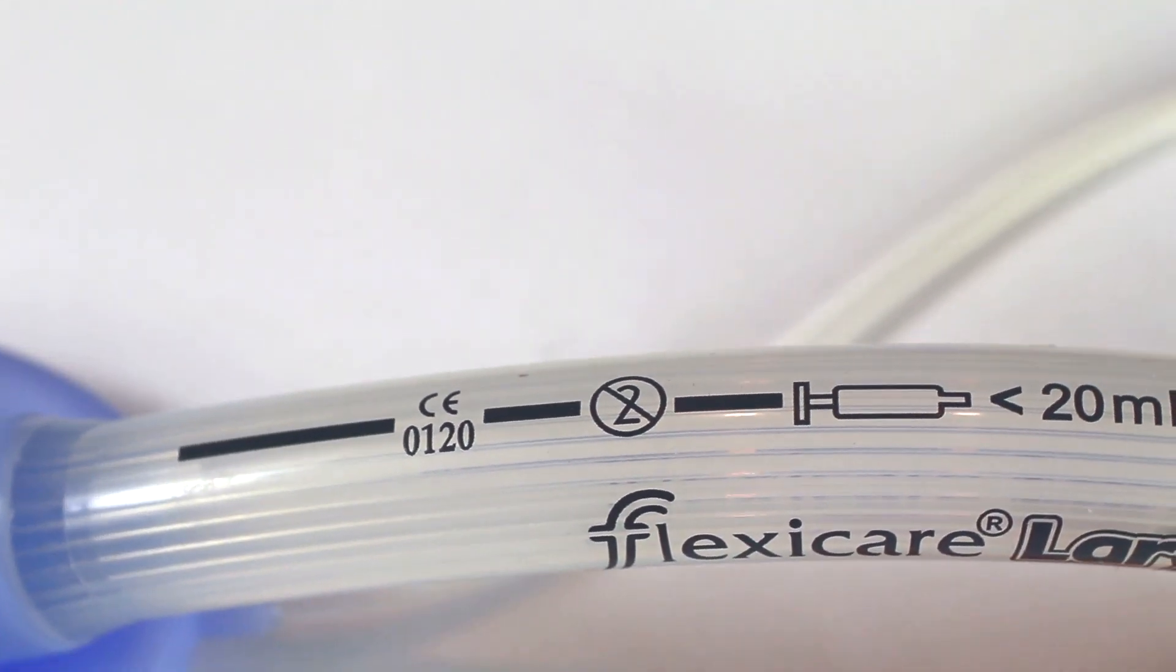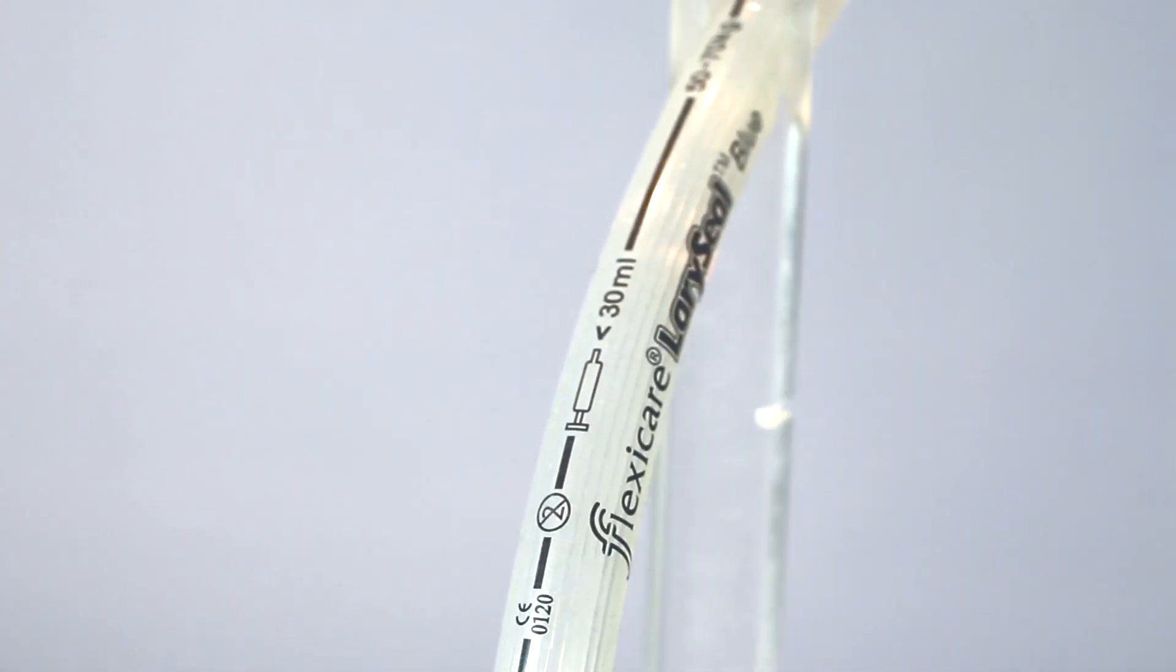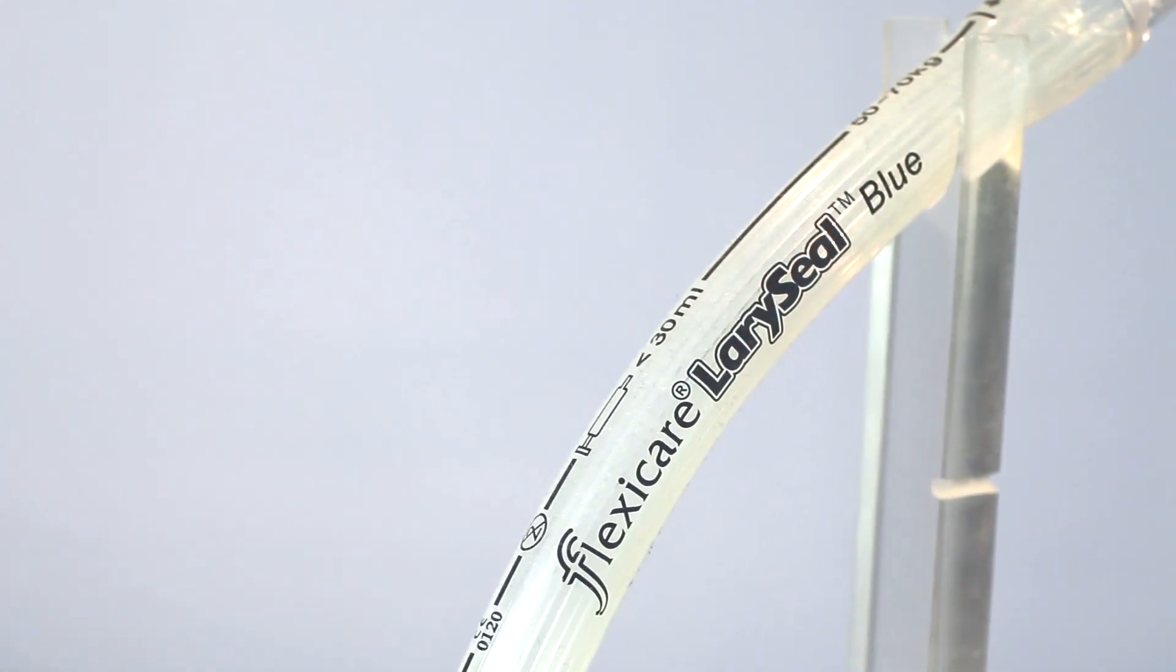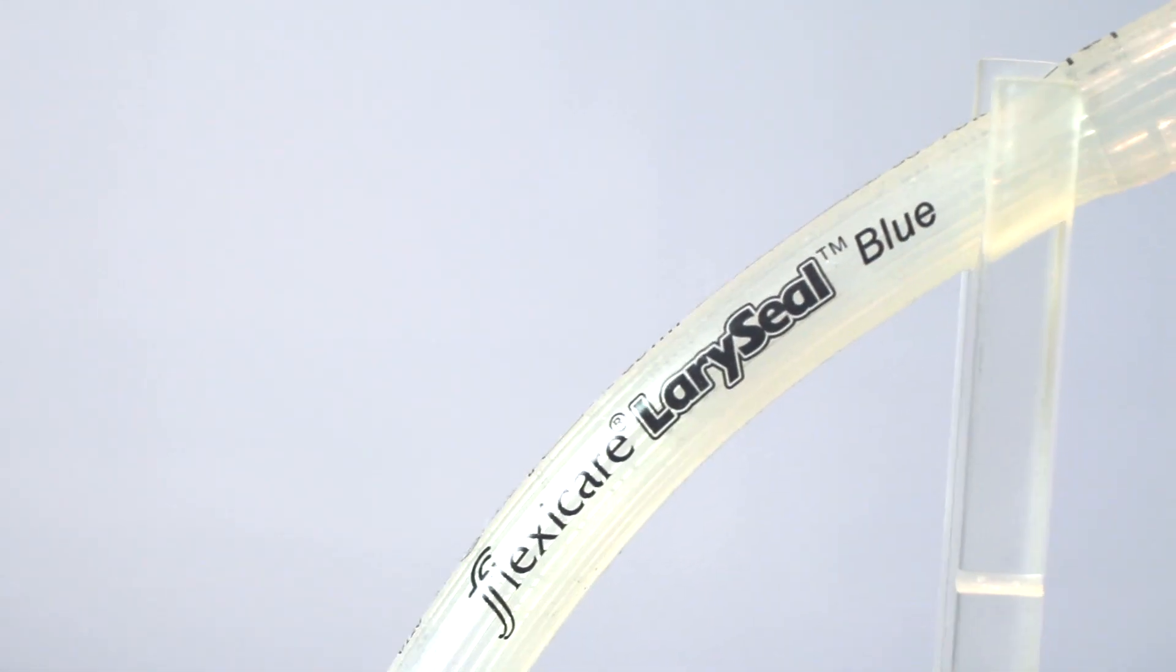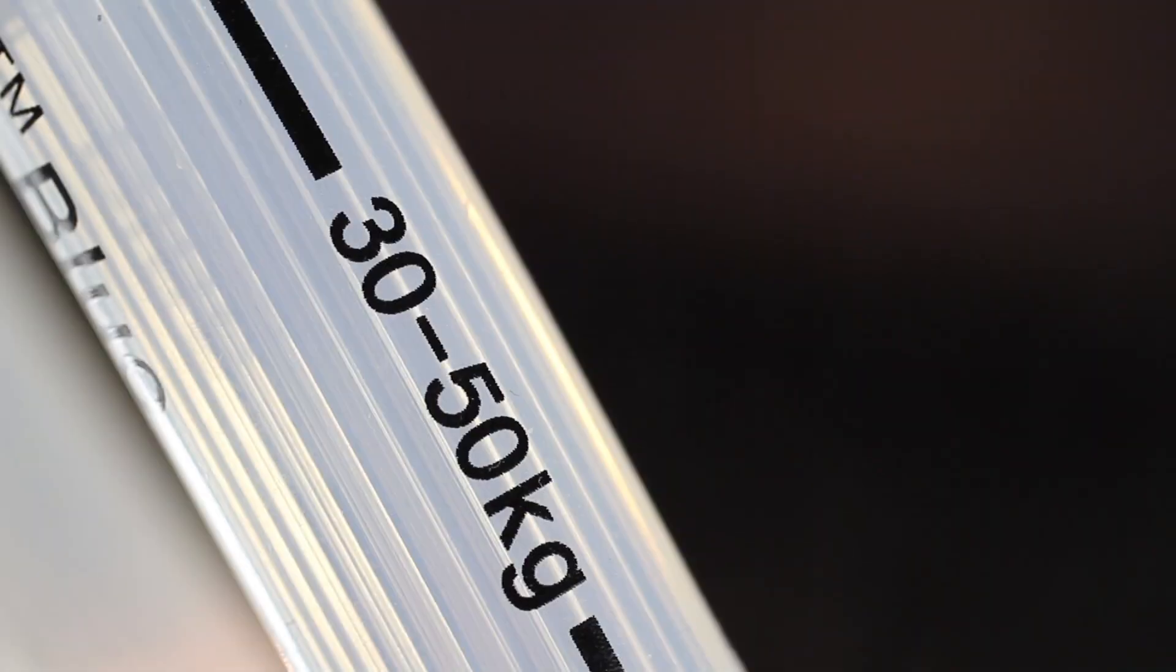Inspection of the Laracel Blue reveals all the essential information visible on the main tube. This allows the user to reaffirm the correct choice and insert Laracel quickly and effectively. You will see that the Laracel main tube clearly indicates approximate patient weight near the 15 millimeter male patient end connector. In this instance the indicated weight range is 30 to 50 kilograms Laracel size 3.